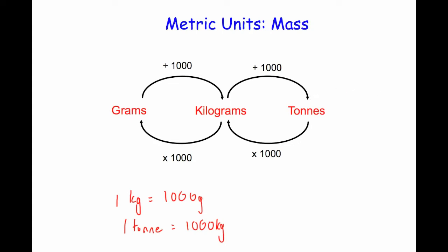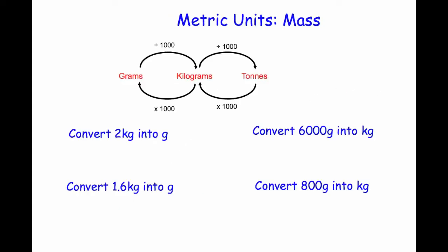Let's have a look at some questions now. Our first question: convert 2 kilograms into grams. To convert kilograms into grams we multiply by 1,000. So 2 times 1,000 equals 2,000 grams.